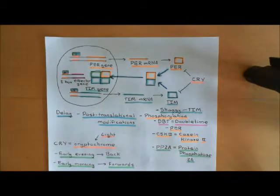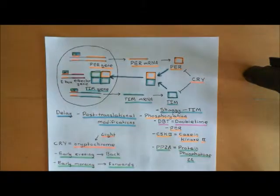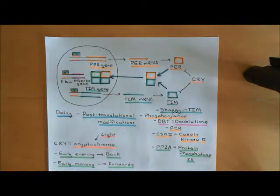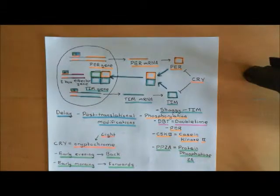However, this is a really delayed process — it takes a long time, there's a lot of faffing about basically. It seems that in order for the period and timeless proteins to heterodimerise, and in order for the heterodimer to then enter the nucleus, there are a whole host of post-translational modifications which need to occur. We've listed some of the important enzymes that might be involved in those here.